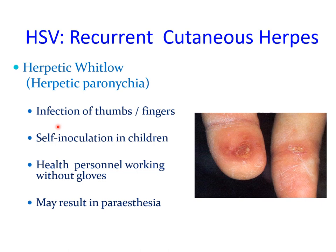Herpetic whitlow primarily involves the skin on the hands, thumbs, and fingers, and self-inoculation in children is a major risk. It can also be observed in health personnel working without gloves or with inappropriate cross-infection control. Because the virus resides in the nerves, it may lead to paresthesia in the skin of the involved region. Herpetic whitlow is therefore another pattern of recurrent herpes simplex infection.